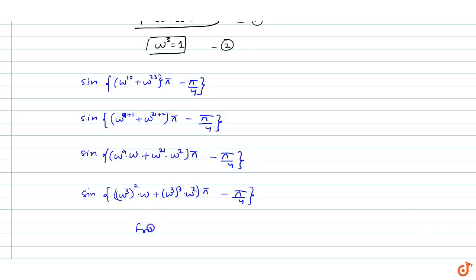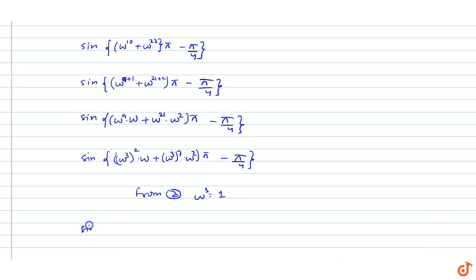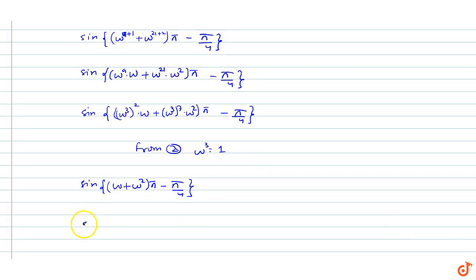From equation 2, we know that omega cubed equals 1. So this simplifies to sin of (omega plus omega squared) into pi minus pi by 4. From equation 1, we know that omega plus omega squared equals minus 1. So we get sin of minus 1 into pi minus pi by 4, which is sin of minus pi plus pi by 4.